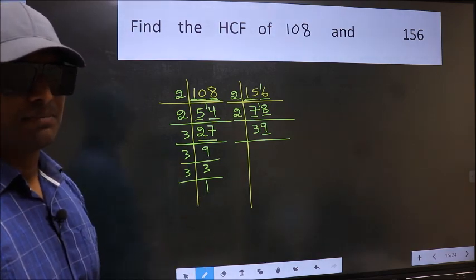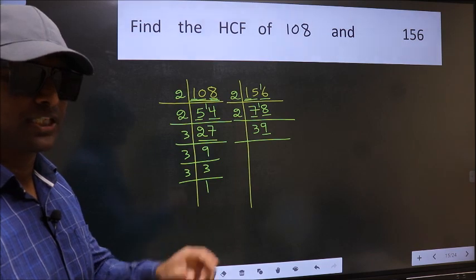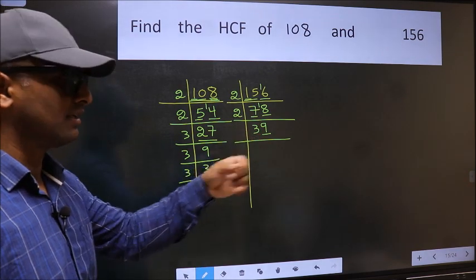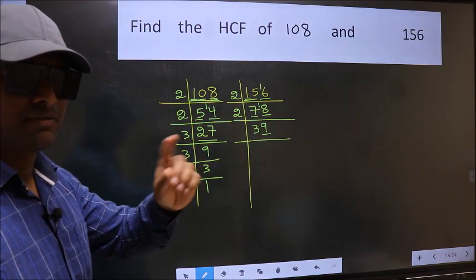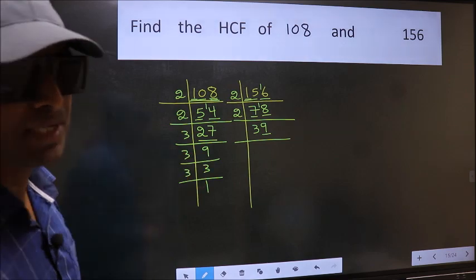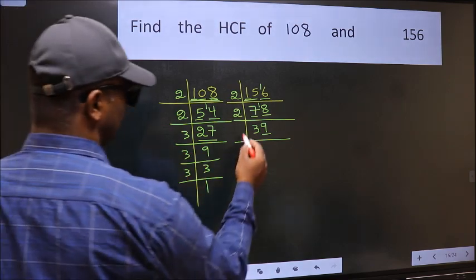Next prime number 3. To check divisibility by 3, we should add the digits. 3 plus 9, we get 12. And 12 is divisible by 3, so this number is also divisible by 3. So take 3.